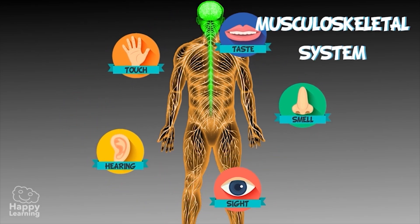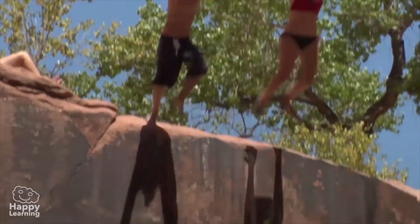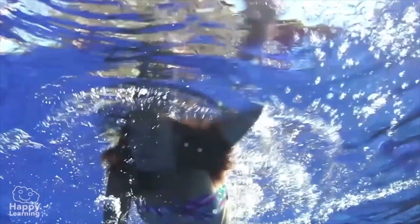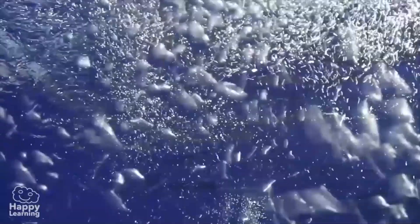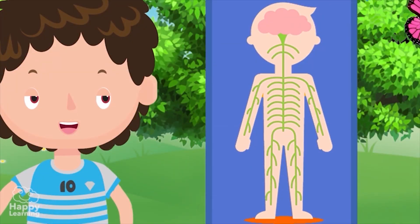The musculoskeletal system transmits the brain's responses, allowing the muscles to perform. So, if we were to fall in the water, for example, the automatic system would send a message to our muscles, ordering us to swim and get out of the water — thank goodness, because otherwise we would drown. Well, now you know about the nervous system. It's really interesting, isn't it?